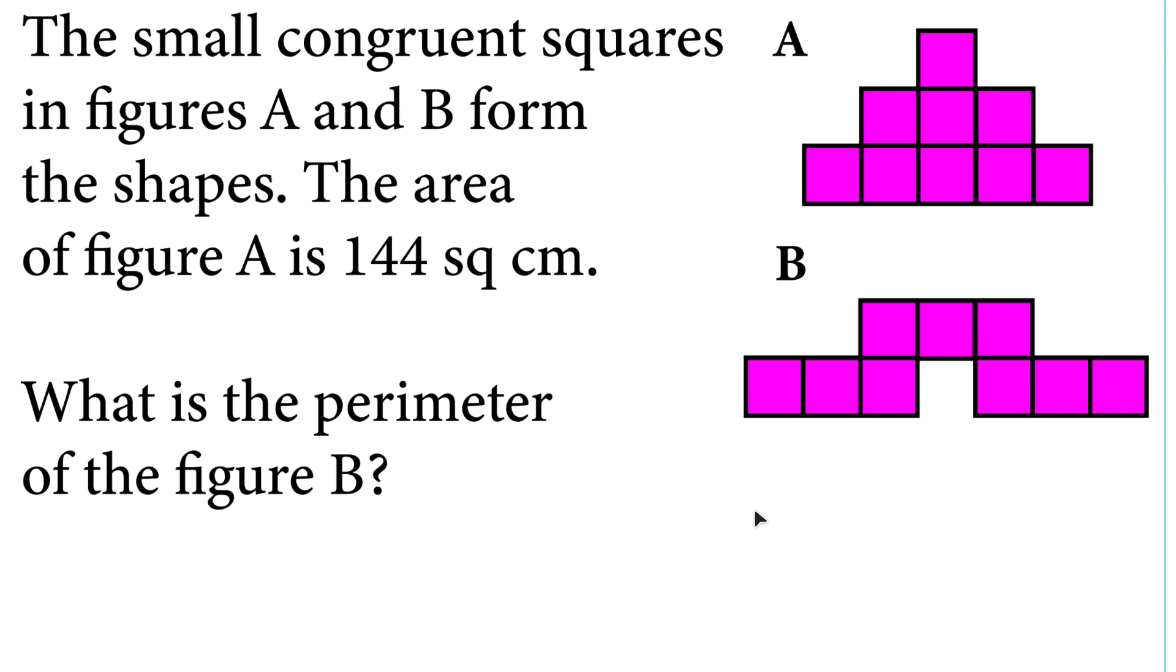To know the perimeter of figure B, we need to know how many side lengths we have, and then we need to multiply the number of side lengths. Let's call it w times w. So how many w's do we have in this shape surrounding the shape?